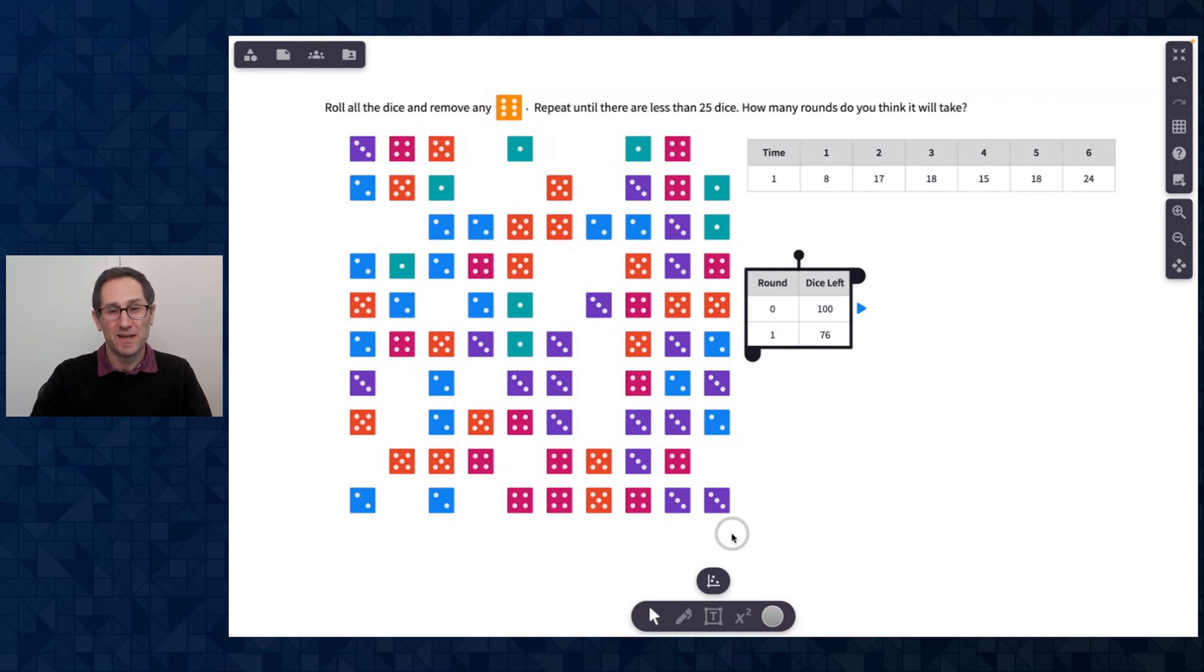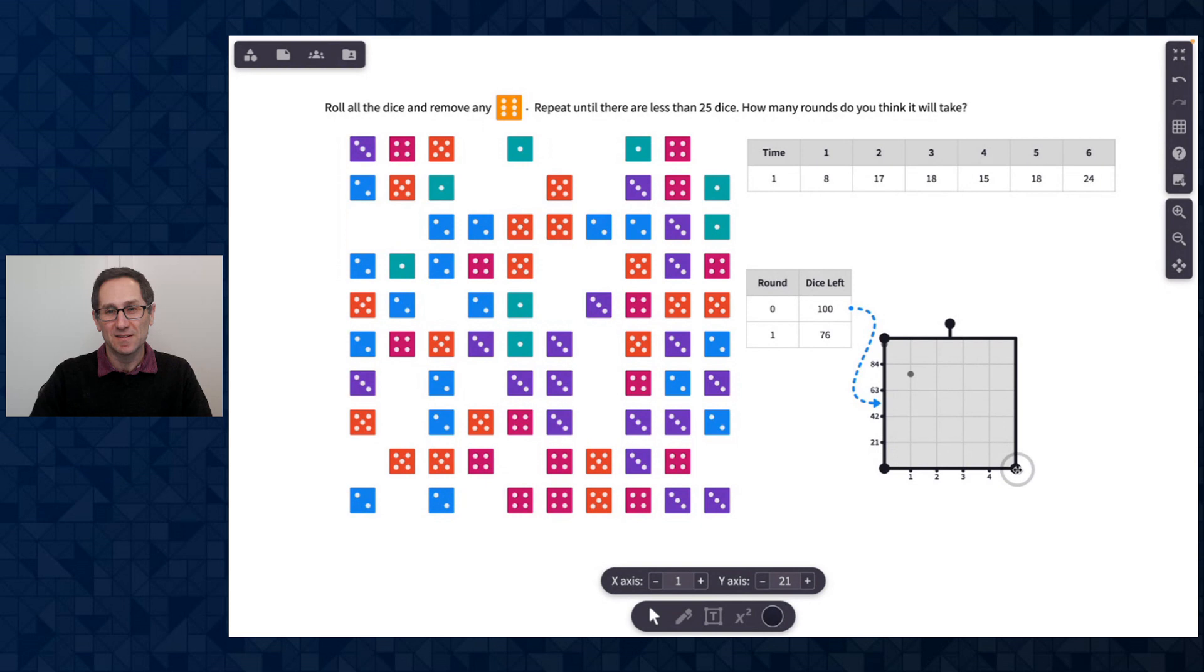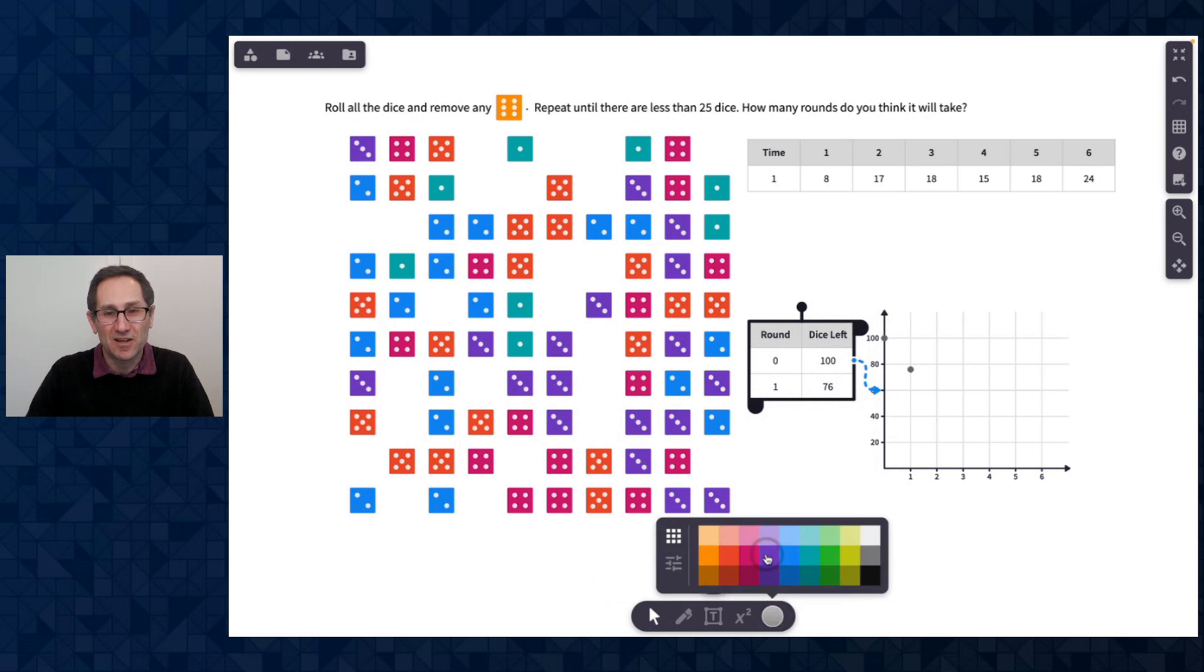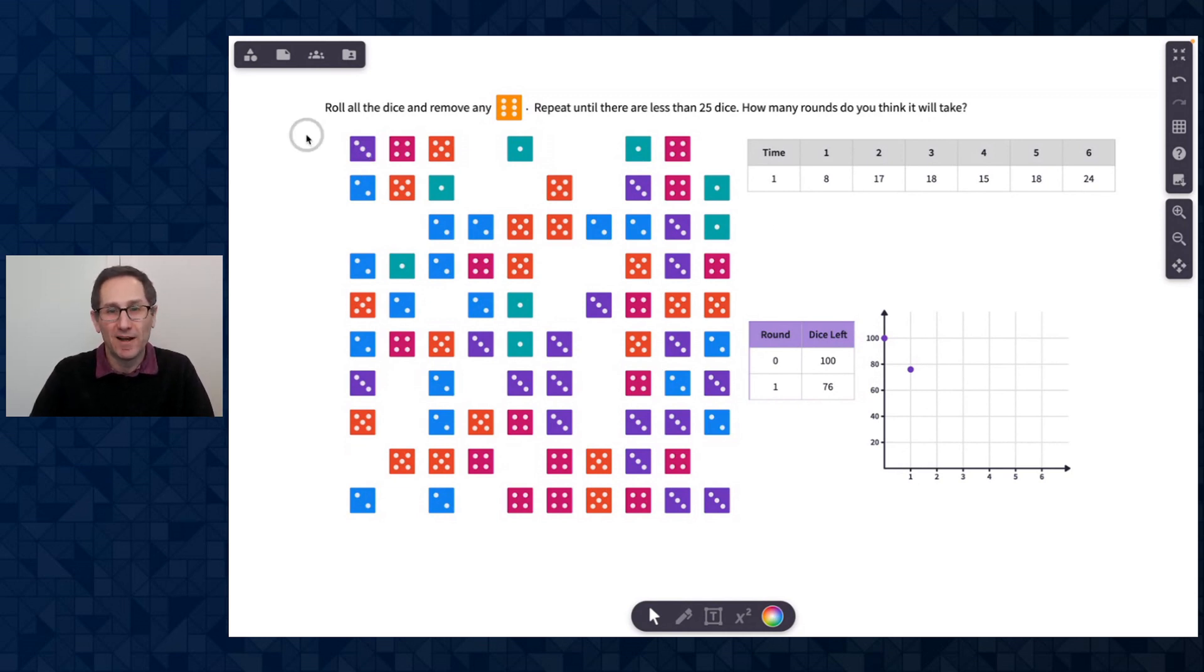I'm going to click on the table and make a scatter plot here. So there's my graph. I'm going to change the scale of the y axis from 21 to 20. And I can see I have that point at 0, 100 and 1, 76. I'll bring this down a little bit. I'm going to change the color of the table to purple so I see those points on the graph a little bit more clearly.